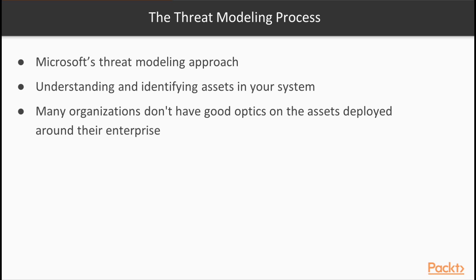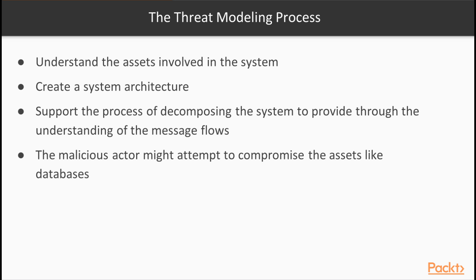This approach begins with understanding and identifying the assets in your system. This may seem common sense, but there are many organizations that don't have good optics on the assets deployed around their enterprise. Once you understand the assets involved in the system, you can then create a system architecture. The architecture supports decomposing the system to provide a thorough understanding of the message flows occurring amongst the assets and external actors. This is important because once you begin to really understand the data flows, you can see where the high-value assets in your system reside — the assets that a malicious actor might attempt to compromise, such as a database.